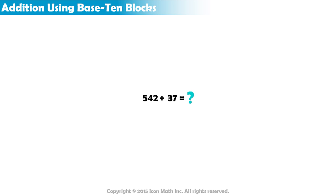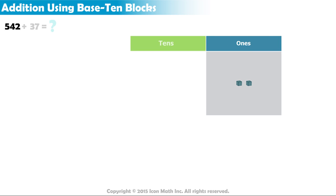We start by representing the first number. In the ones place, we have 2 units, so we use 2 individual units like these. In the tens place, we have 4 tens, so we need 4 blocks of 10 units or 4 rods.